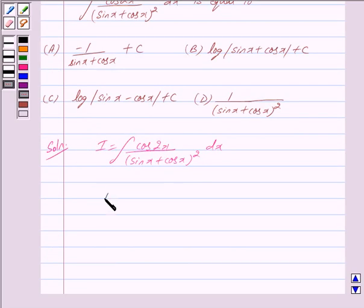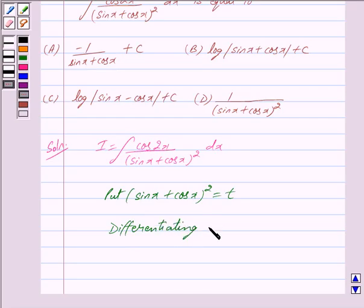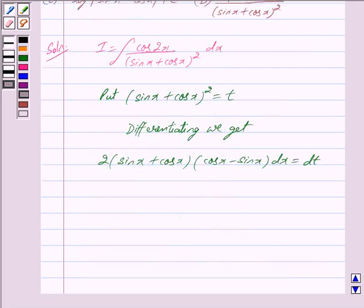Now we put sin x plus cos x whole square equal to t. Differentiating this we get 2 times sin x plus cos x times cos x minus sin x dx equals dt.